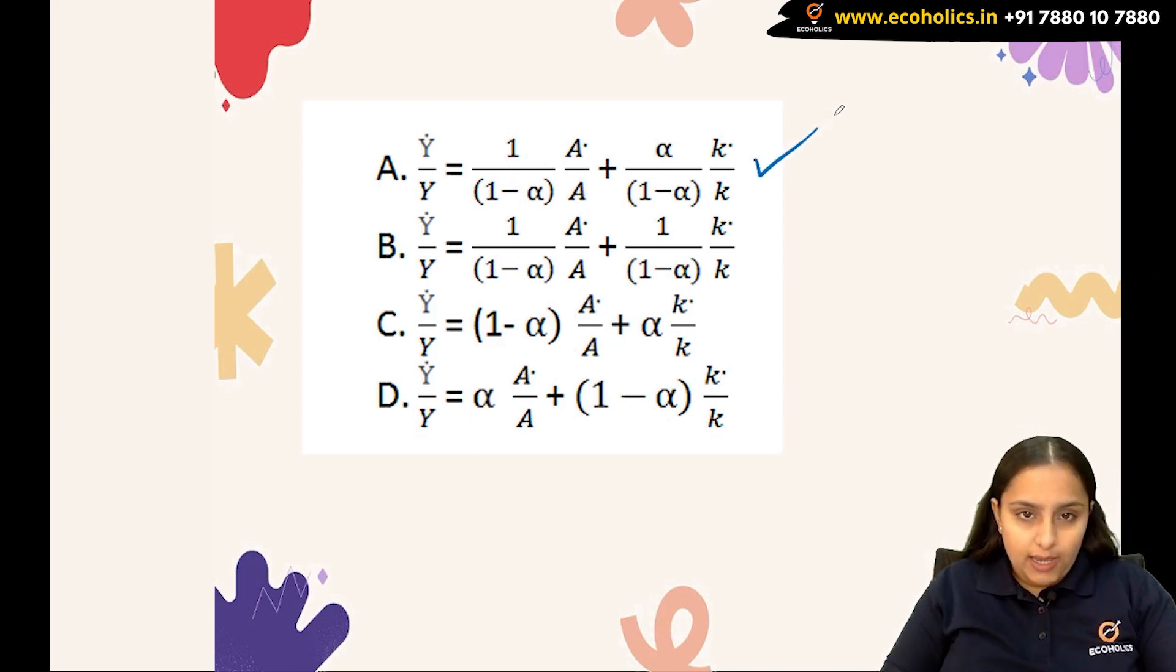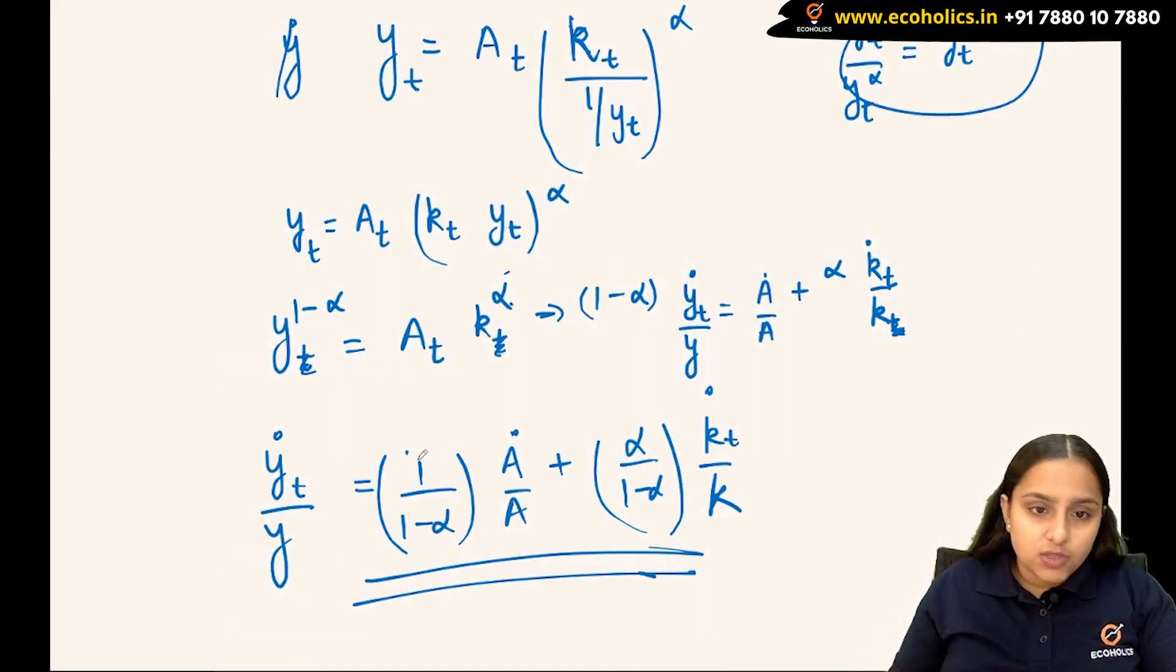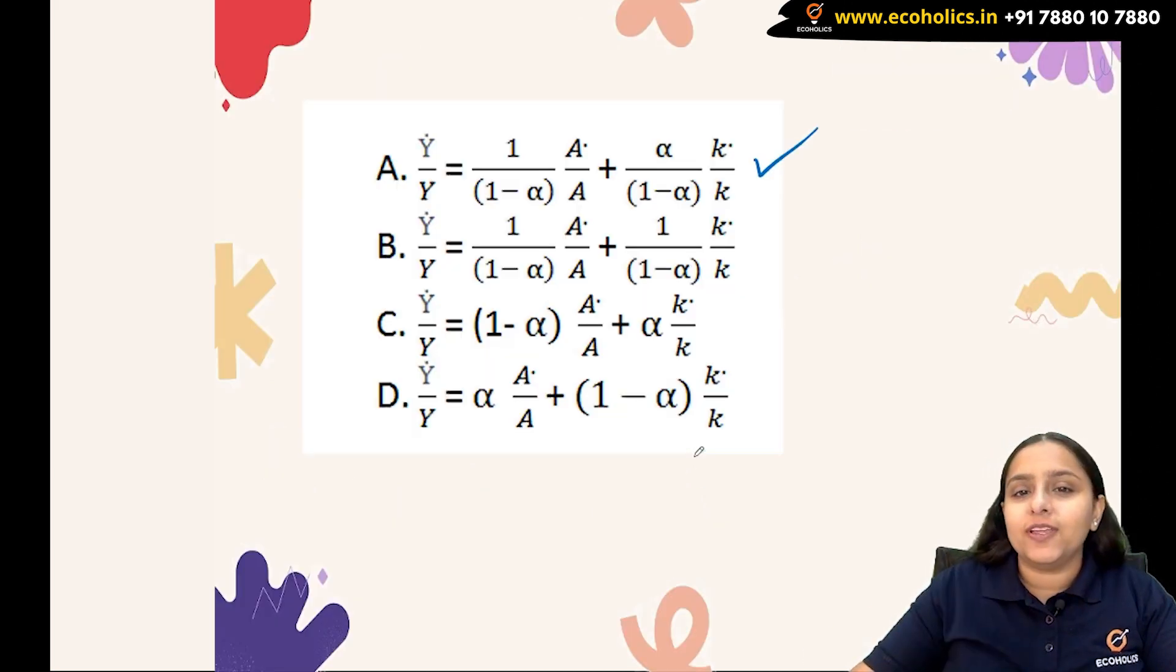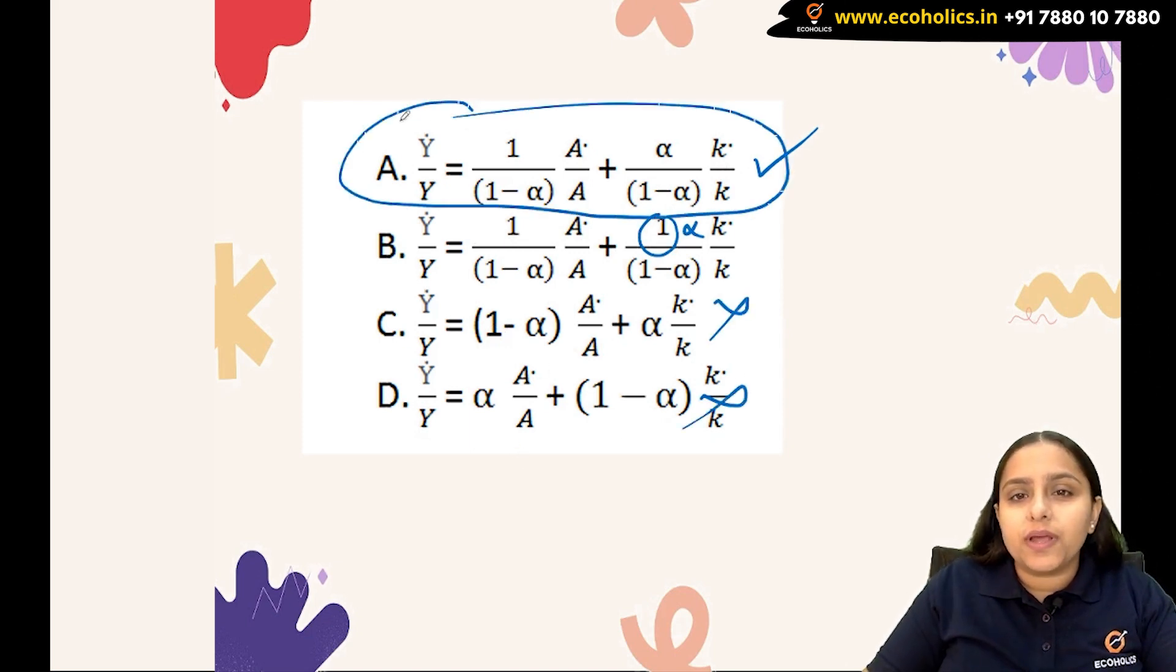The correct answer would be option A as it matches: 1/(1-α) × ȧ/a + α/(1-α) × k̇/k. Option B has incorrect terms, and options C and D are totally incorrect. So option A becomes my correct option.